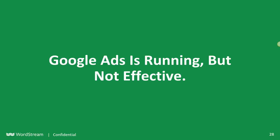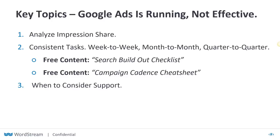We're now going to look at the idea that your Google Ads account is actually running but not very effective. What are some things you can do to help yourself out? We'll return to impression share and analyze how it impacts your performance. We'll also talk about consistency in your account. There are a couple of free documents you'll receive at the end of this webinar — one gives you a checklist of everything to consider about a search campaign, and the second gives you tasks to consider week-to-week, month-to-month, and quarter-to-quarter: a roadmap for general paid search management.